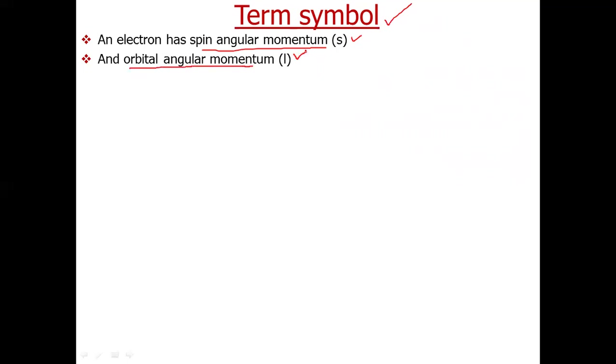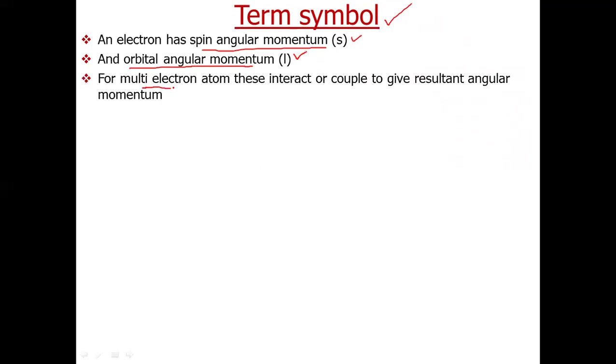Now we will come to our main topic: term symbols. An electron has spin angular momentum s, which comes from the rotation of the electron around its own axis. The electron is also revolving around the nucleus, generating orbital angular momentum calculated from quantum number l. For a multi-electron atom, these individual spin and orbital angular momenta will interact or couple with one another to give a resultant angular momentum.